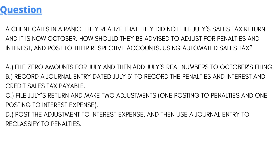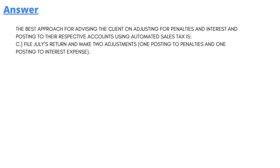Option C: file July return and make two adjustments. Option D: post the adjustment of interest expense and then use a journal entry to reclassify penalties.